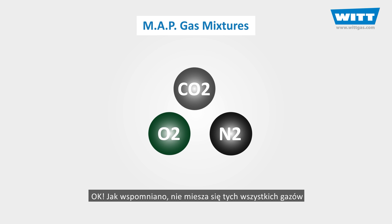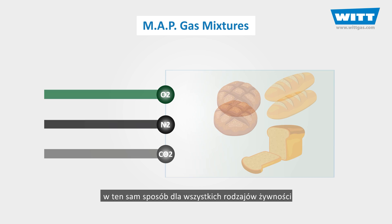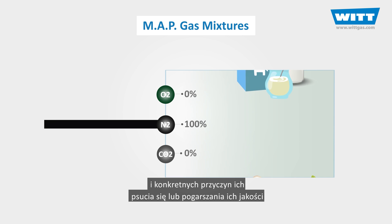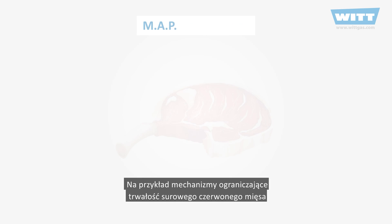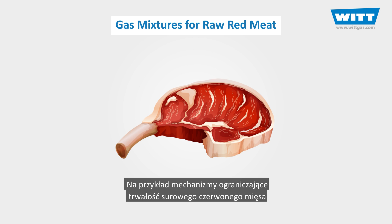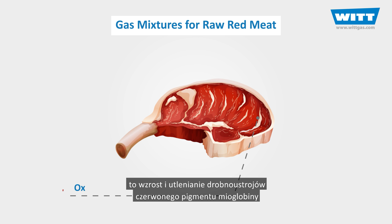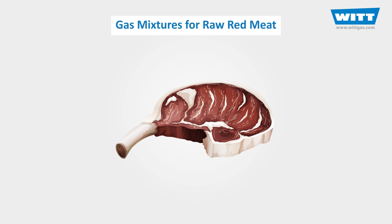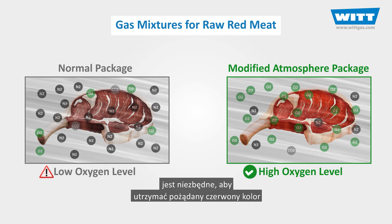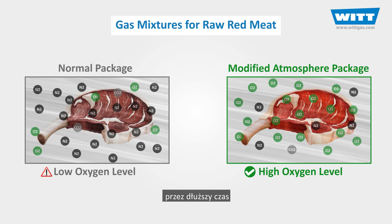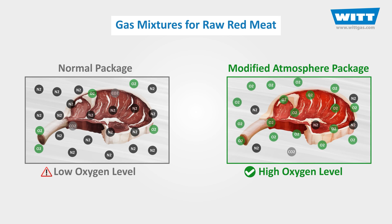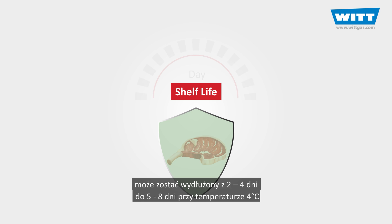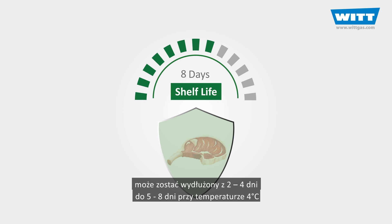We don't mix these gases in the same way for all kinds of foods. Depending on the type of food products and specific causes of their spoilage or quality deterioration, the gas mixture would be different. For example, mechanisms that limit the shelf life of raw red meats are microbial growth and oxidation of the red myoglobin pigment, converting it to oxidized brown metmyoglobin. For this reason, high concentrations of oxygen are necessary to maintain the desirable red colour for a longer period. With the right mixtures, the practical shelf life of consumer-packed meat can be extended from 2–4 days to 5–8 days at 4°C.